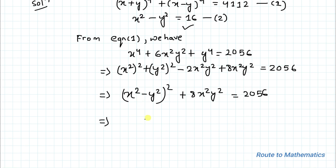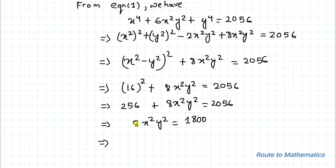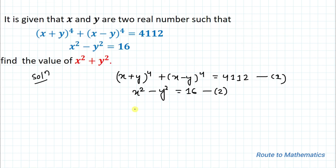Substituting x²−y² = 16, we have 16² + 8x²y² = 2056, which gives 256 + 8x²y² = 2056. So 8x²y² = 1800. Dividing both sides by 8, we get x²y² = 225.